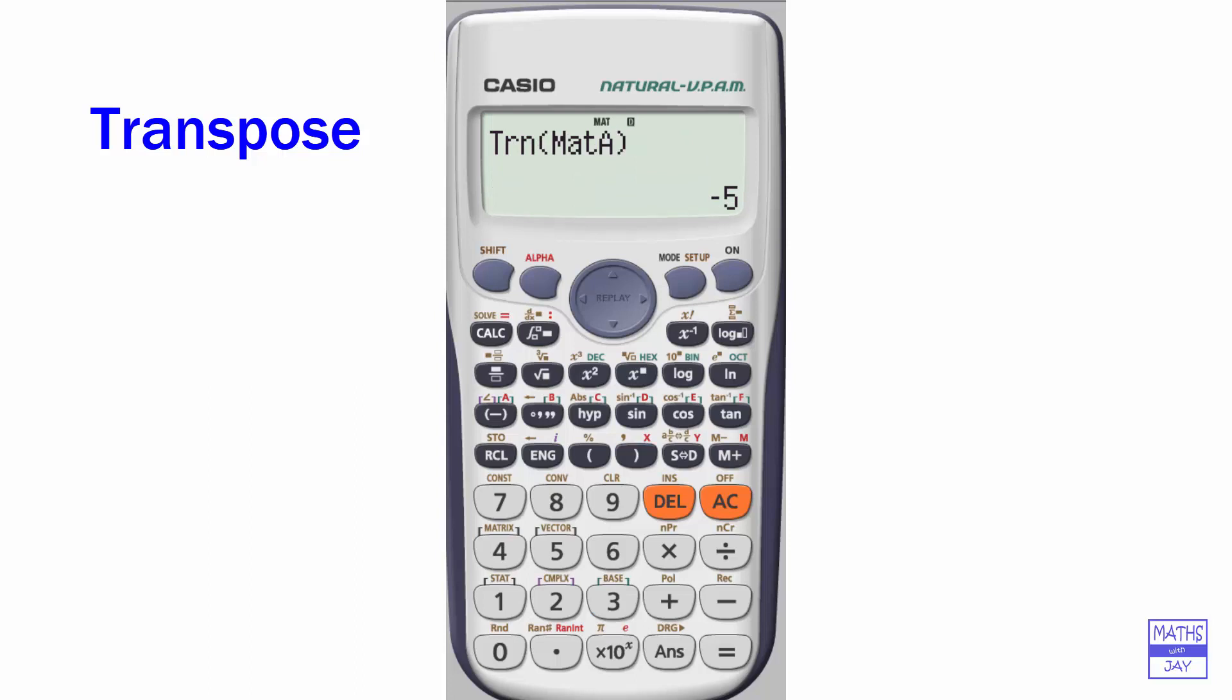And transpose. If you've had a good look before at what matrix A is, you can now see that the rows and columns have switched around, so the first row is now the first column and so on.